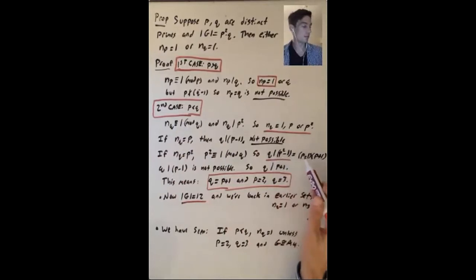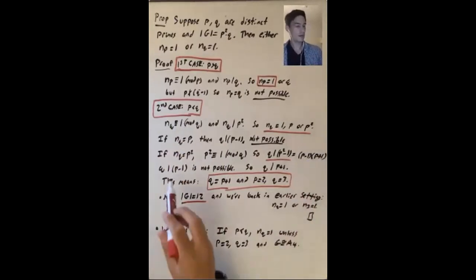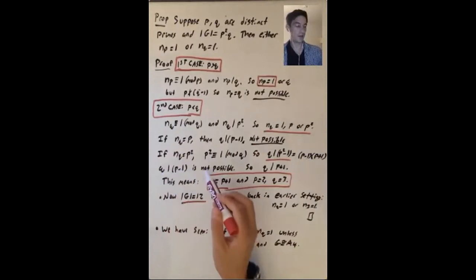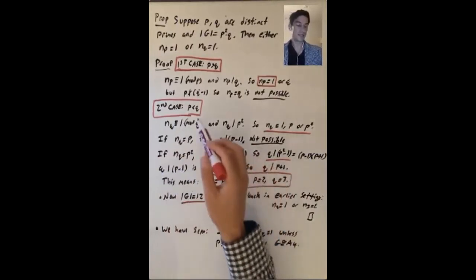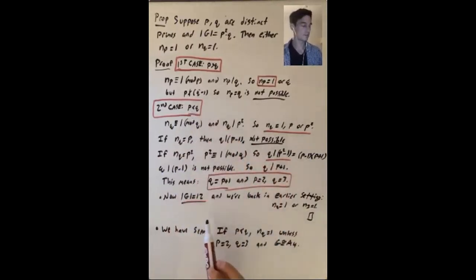But p squared minus 1 factors nicely as p minus 1 times p plus 1. So if a prime number divides a product of these two things, it divides one of those two things. So it divides one or it divides the other. You know that q doesn't divide p minus 1. We just said that. It's because q is bigger than p.